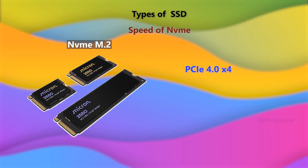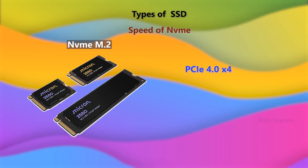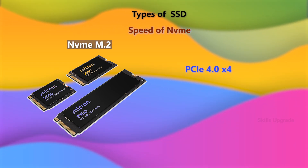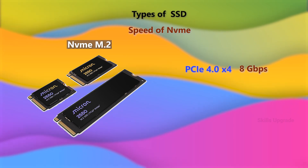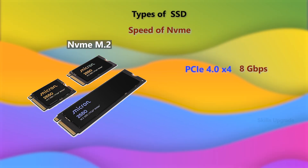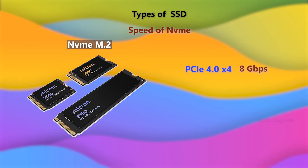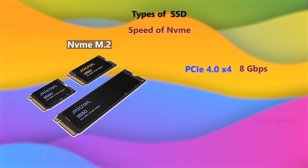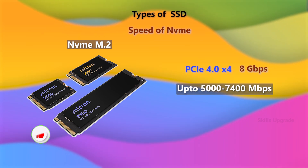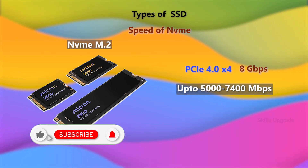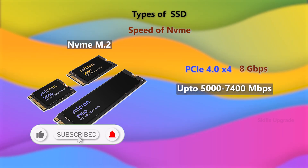PCI Express 4.0 x4 version is 8 Gbps, which is 8000 Mbps. The write speed is 7000 Mbps and the read speed is 7400 Mbps.